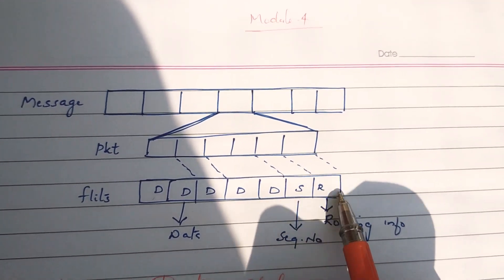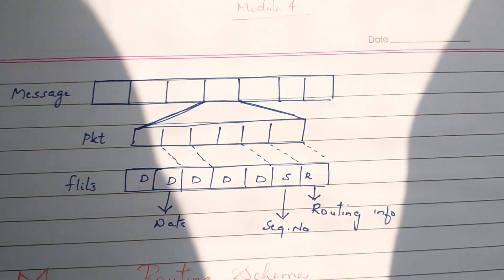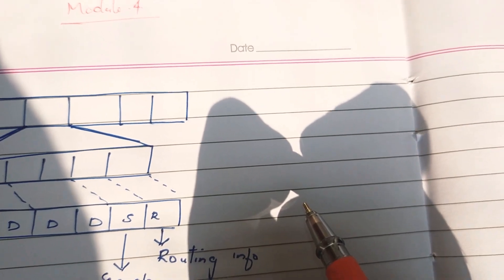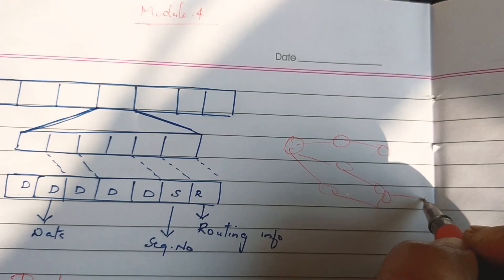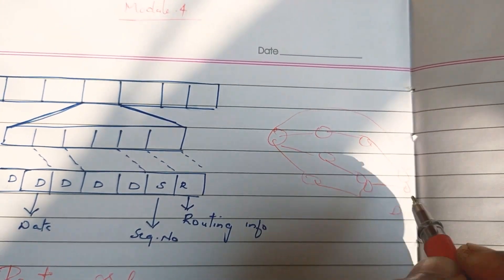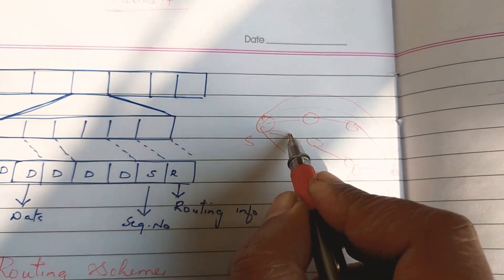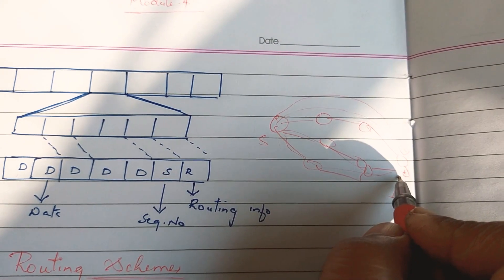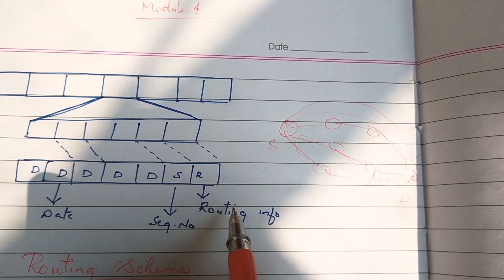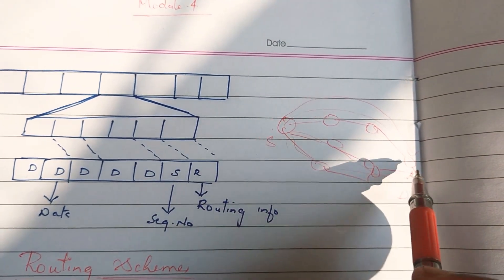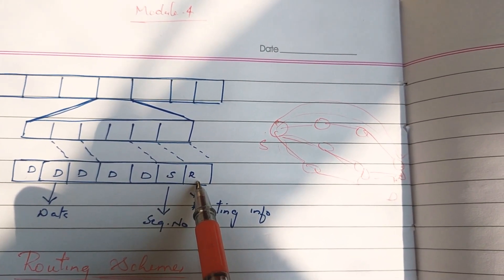The destination address is specified at the destination. There are small intermediate nodes in the network. If we move through the network from the source, we use the destination address and route accordingly through intermediate nodes. The routing information is provided to guide the packet to the correct destination address.